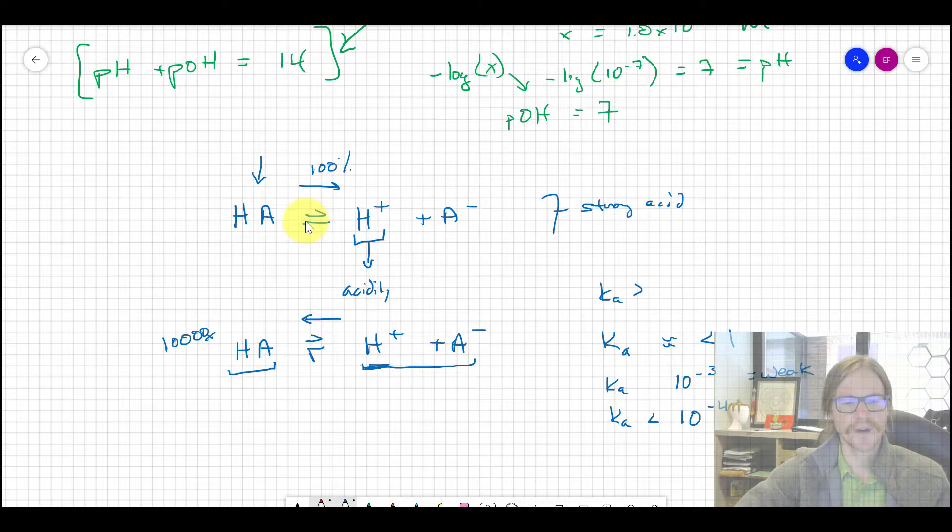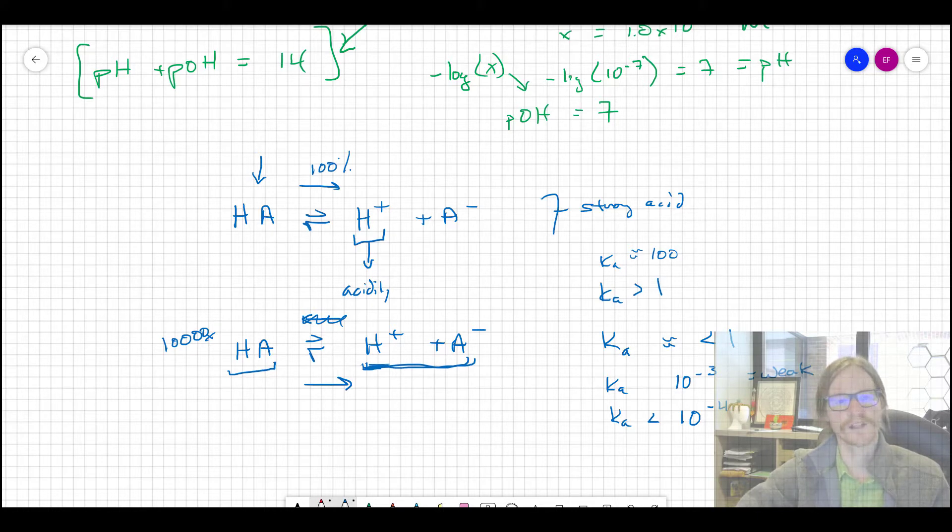On the other hand, if Ka is greater than 1, then the equilibrium lies towards products. As this gets considerably greater than 1, especially if we have Ka's that are on the order of a hundred, then we're talking about almost 100% of all the HA dissociated. Our proxy for strength is Ka - an explicit measure of the concentration of the reactants and their products.